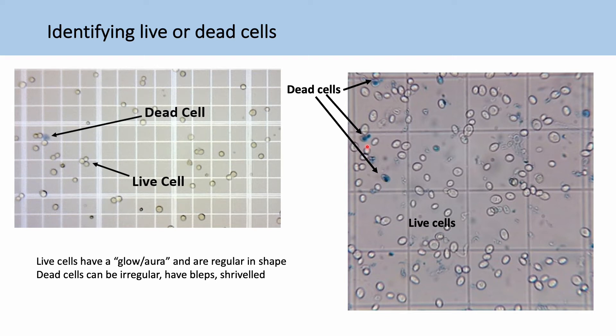And they'll also be kind of irregular in shape. So you can see here and they'll have sort of blebs because they're undergoing cell death. Then live cells will be kind of more regular, more rounded. They kind of have an aura or like a sort of glow to them that the dead cells won't have.